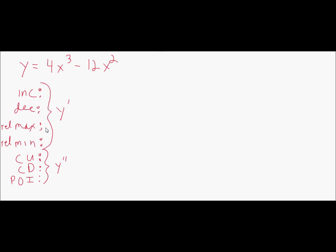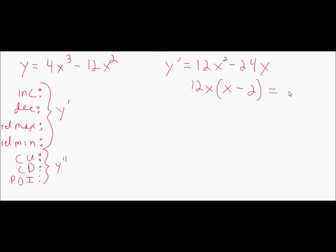So to find increasing and decreasing, I'm going to find y prime, which equals 12x squared minus 24x. I want to know where this is zero and where it's undefined. I'll factor it: 12x times (x minus 2). This polynomial is never undefined, but it equals zero at x equals zero and at x equals two. Those are your critical numbers.